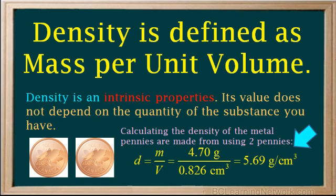If we calculate the density of the metal pennies are made from using two pennies, density equals mass divided by volume, which is 4.7 grams divided by 0.826 centimeters cubed, which again works out to 5.69 grams per centimeter cubed. The mass and volume have both doubled, but the density remains the same.